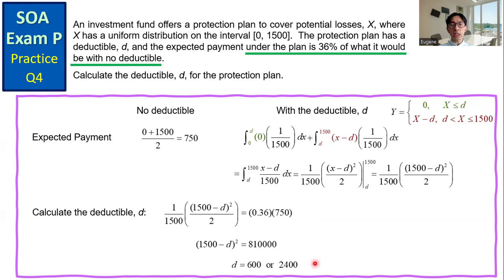We obtain D equals 600 or 2400. But the deductible must be less than or equal to 1500. So the answer is the deductible is $600.